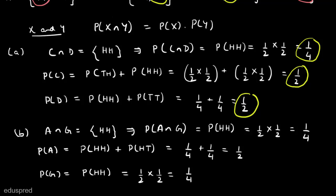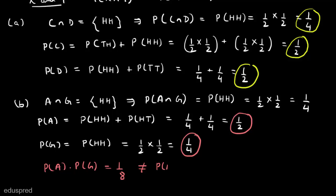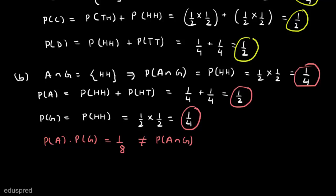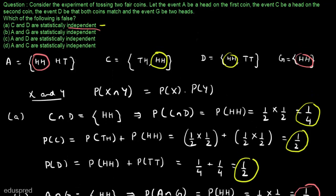Let's see if A and G are statistically independent. P(A) = 1/2 and P(G) = 1/4, so P(A) × P(G) = 1/8, which is not equal to P(A ∩ G) = 1/4. Therefore, A and G are not statistically independent, which means part B is the false statement and is the right answer.